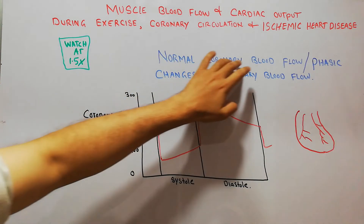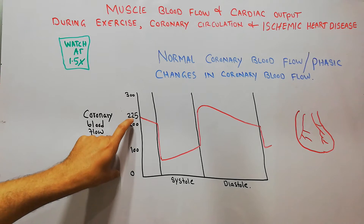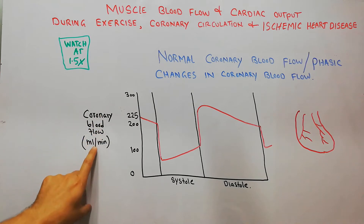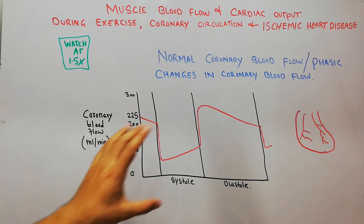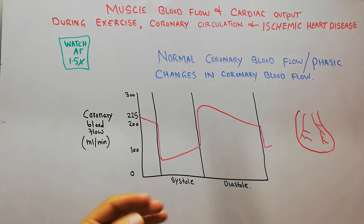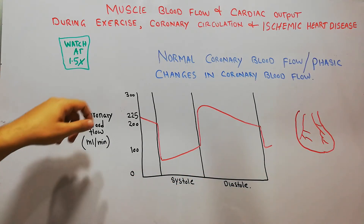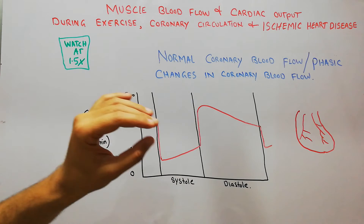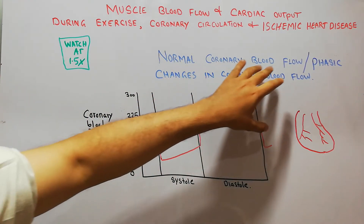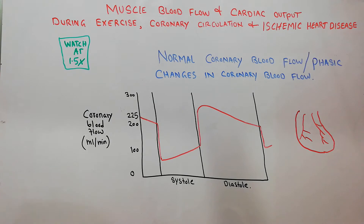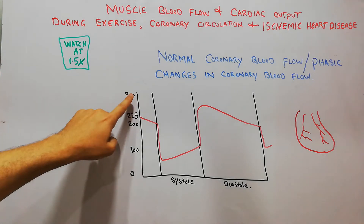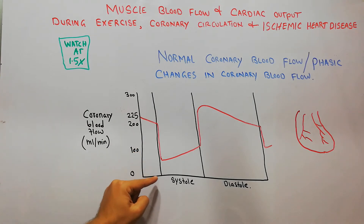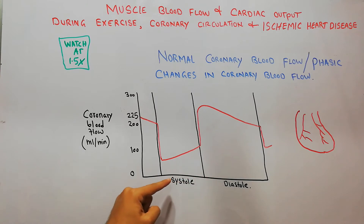The normal coronary blood flow is about 225 ml per minute — this is the total amount of blood the heart as a whole is receiving. Here on the graph, the y-axis shows coronary blood flow, and we have plotted the changes that occur in blood flow during systole and diastole.